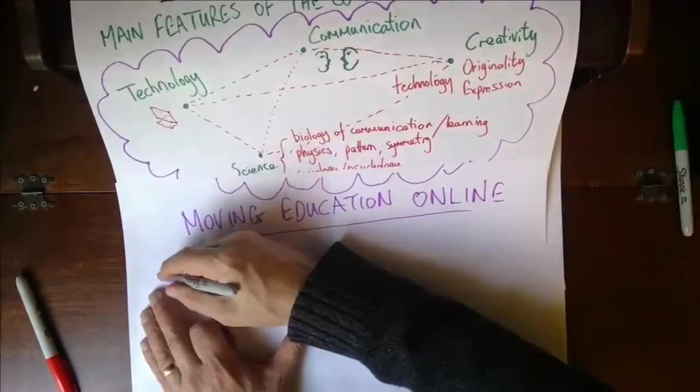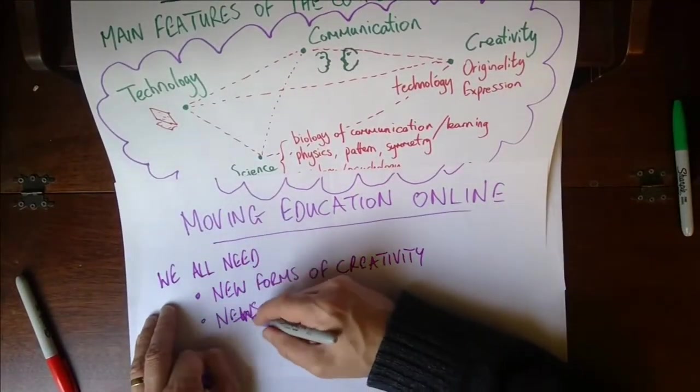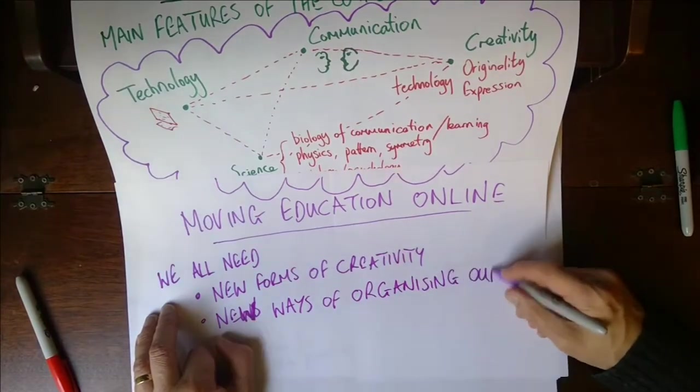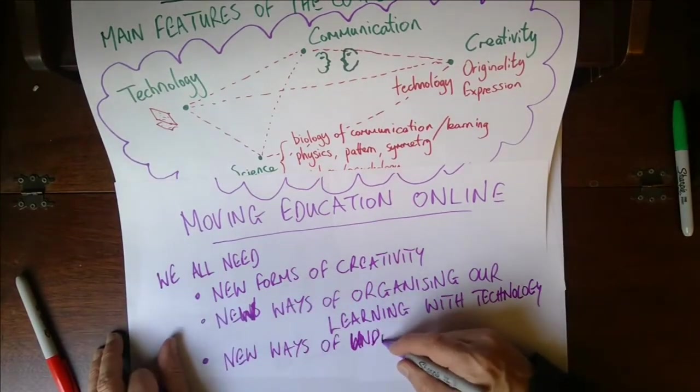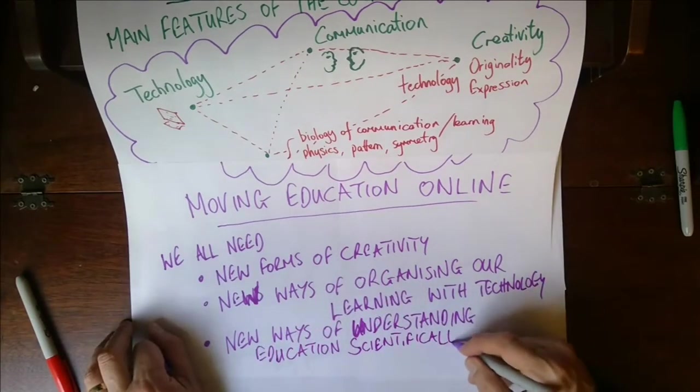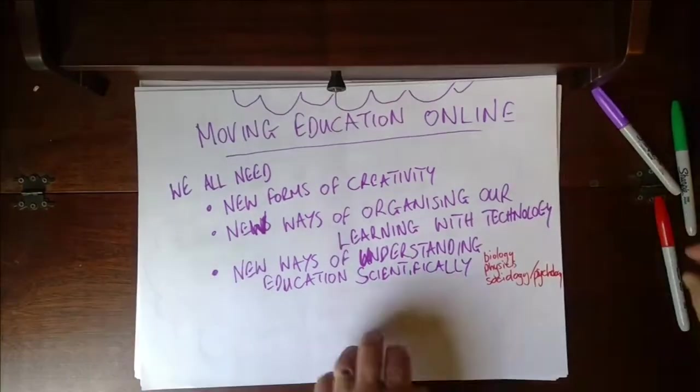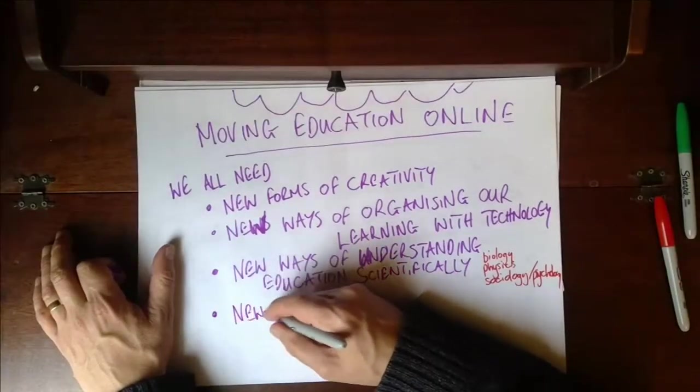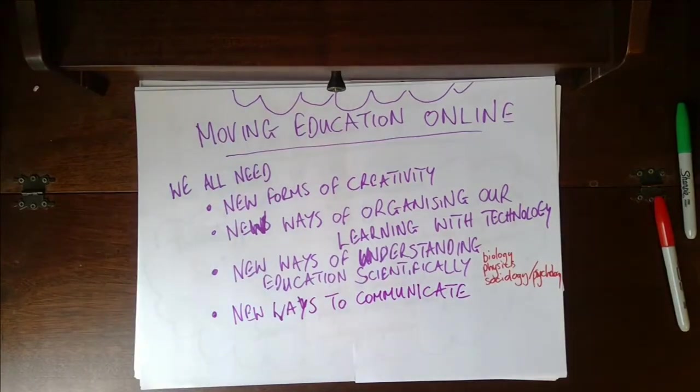So, when we move online, we've got to find new ways of being creative. We need new ways of organising our learning with technology. We need new ways of understanding scientifically what we are doing in education. That means both the biology of education, the sociology and psychology, and so on. And we need new ways to communicate.